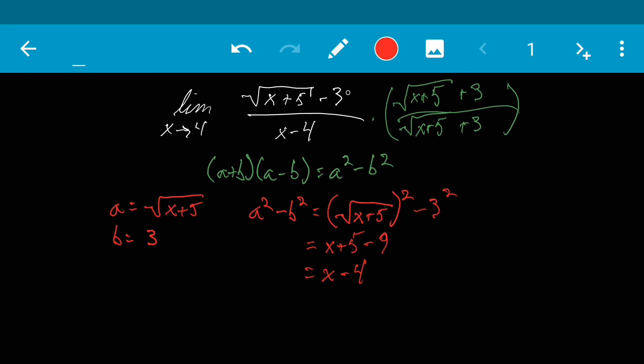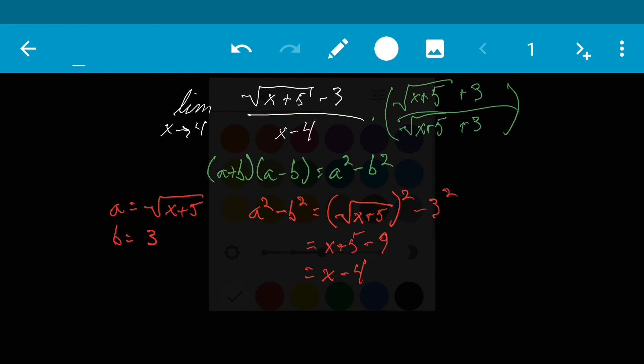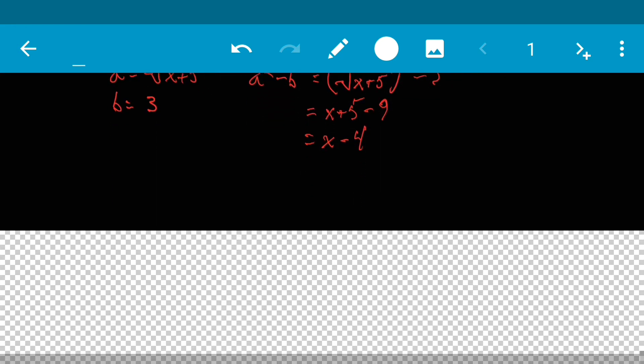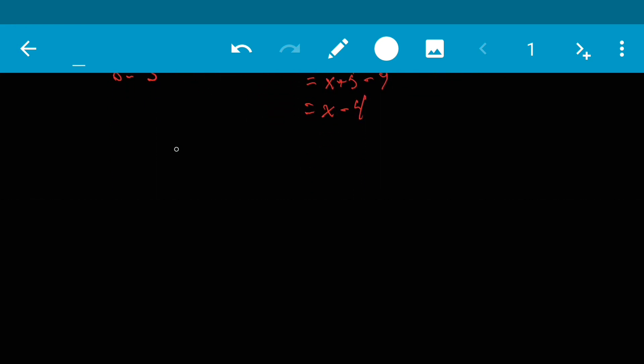So x minus 4 is now going to be our numerator. So let's just rewrite that. We have the limit as x approaches 4. Our numerator is x minus 4 and our denominator is x minus 4 times that conjugate that we multiplied by. So we have x plus 5 plus 3.